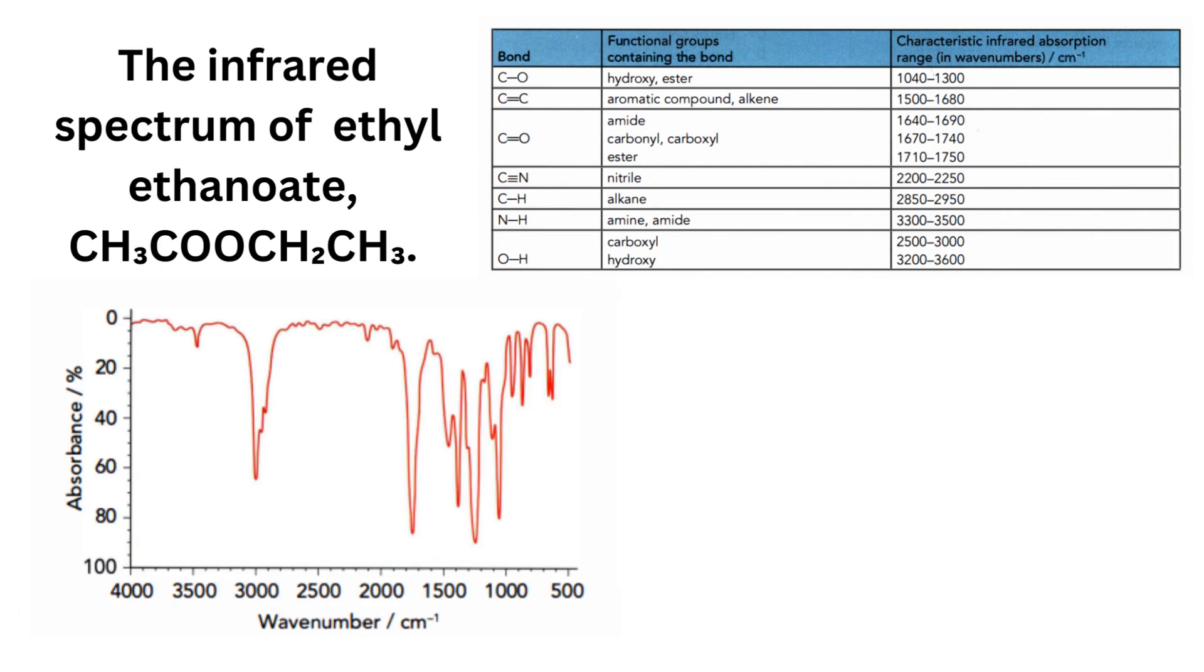The ester value rises in the range: C-O ester value rises in the range 1040 to 1300, and C=O ester value rises in the range 1710 to 1750.